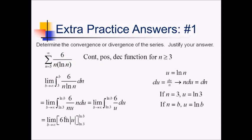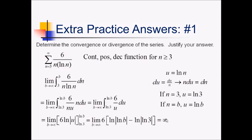Now, to evaluate this, let me take a 6 out of all this. Inside, I'm going to have ln|ln(b)| minus ln|ln(3)|. Now I have to actually take the limit as b approaches infinity. As b approaches infinity, ln(b) approaches infinity, and as that approaches infinity, this outer ln is also approaching infinity. So this whole thing is going to infinity — this second term is insignificant. Since my limit of the integral diverges to infinity, that means the original series also diverges by the integral test.